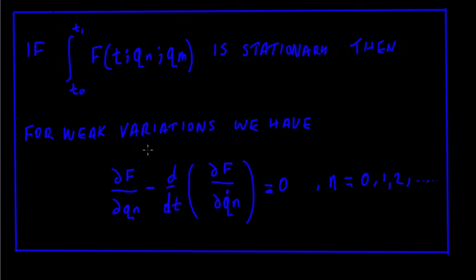then for weak variations we're going to have this form of the Euler-Lagrange equation here, where the value of n ranges from, should actually say n ranges from one onwards. So I'll change that—one, two, three up to infinity.